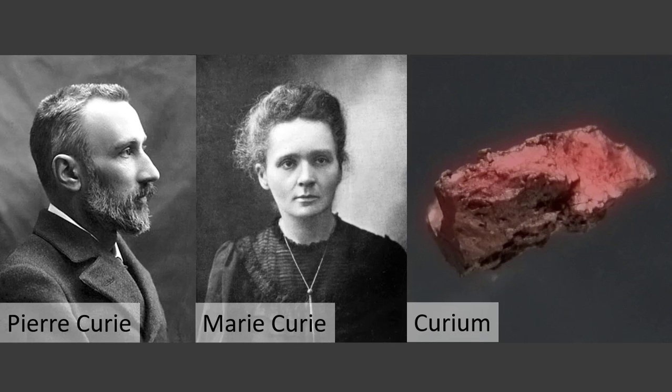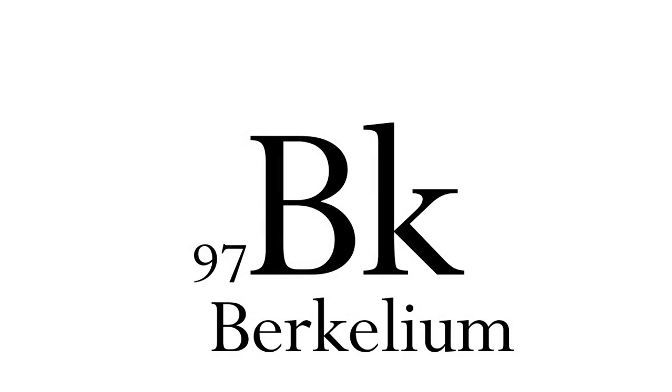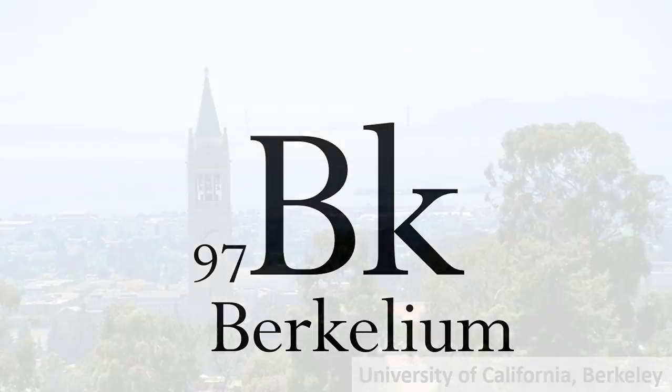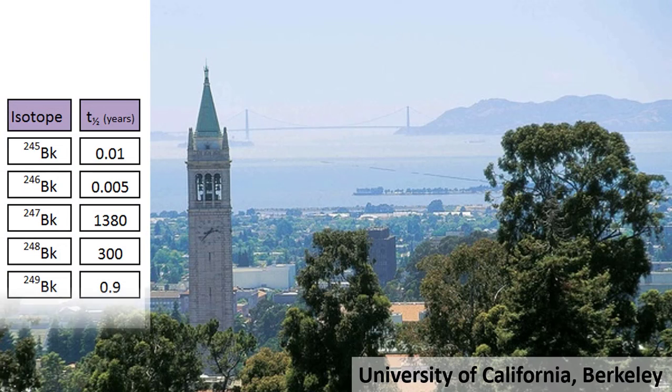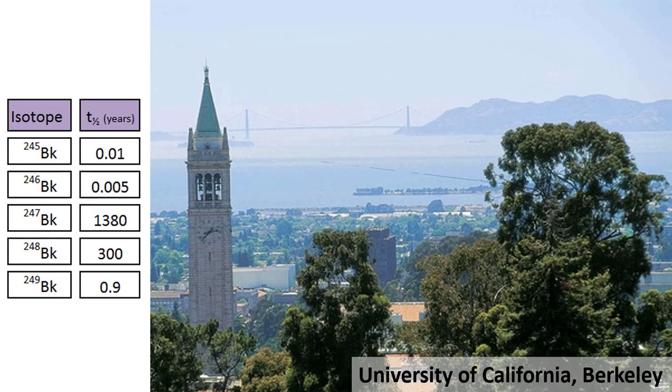Curium is used as an alpha source in a spectrometer used on a number of exploratory space missions. These include Spirit and Opportunity, Sojourner, and the Curiosity rovers. Ninety-seven is berkelium, named after Berkeley, home of the University of California's radiation laboratory, where Seaborg and company first identified the element.